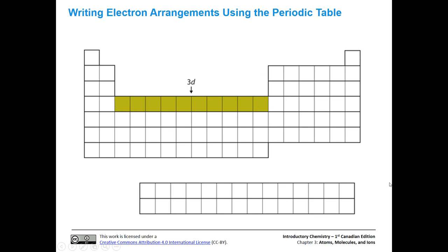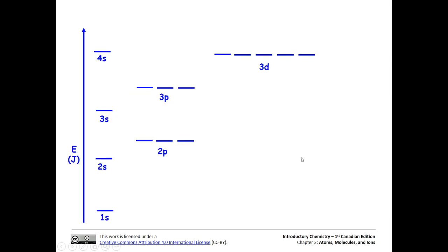That's something to keep in mind as we move through the course: 4s2, 3d10, 4p6 if we went all the way across. Here is the orbital energy diagram with more context from the periodic table: there's 1s for the first row, then 2s and 2p for the second row, and n=3 with 3s and 3p. The d orbitals appear in the n=4 row of the periodic table but we drop back n minus 1, so they're 3d. And then there's our 4s.